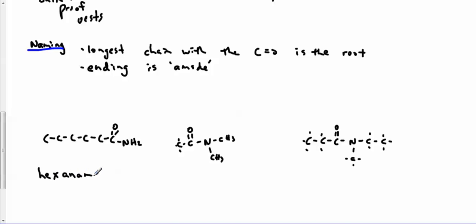And here, I've got a two carbon chain. My root is going to be ethanamide. But I also have methyl groups here and here. Where are they? They're attached to the N. So I'm going to go N, N, dimethylethanamide.